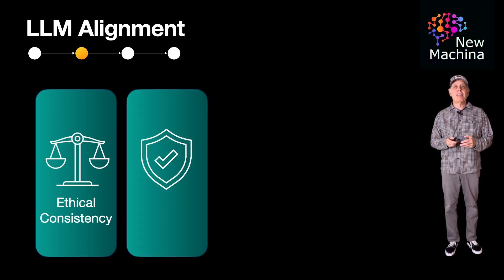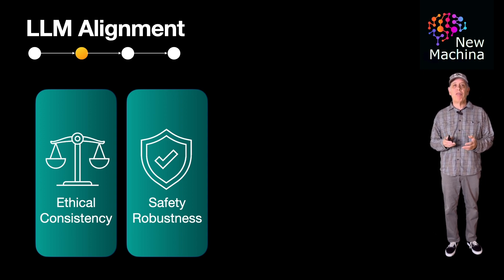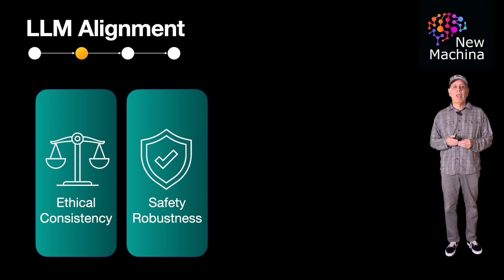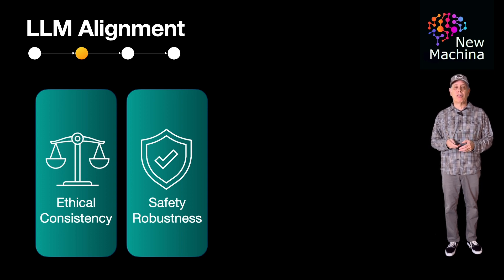The second is safety and robustness. This involves guaranteeing that the LLM doesn't engage in unsafe behaviors or generate harmful advice. It also means that the LLM performs reliably even in a challenging or adversarial context.